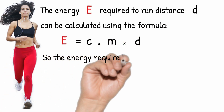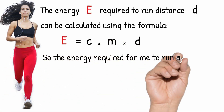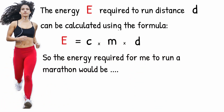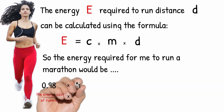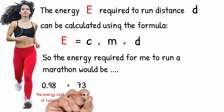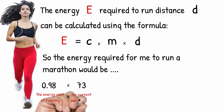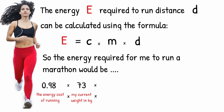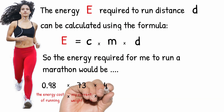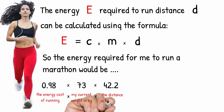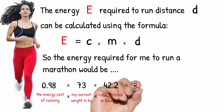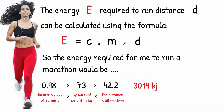So the energy required for me to run the marathon would be 0.98 — the energy cost of running — multiplied by 73, my current weight in kilograms, multiplied by 42.2, the distance of a marathon. That equals 3,019 kilojoules.